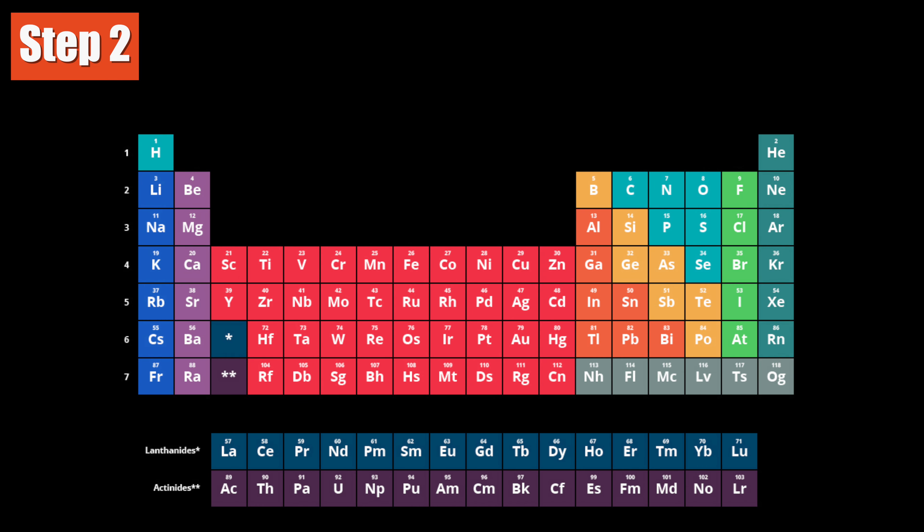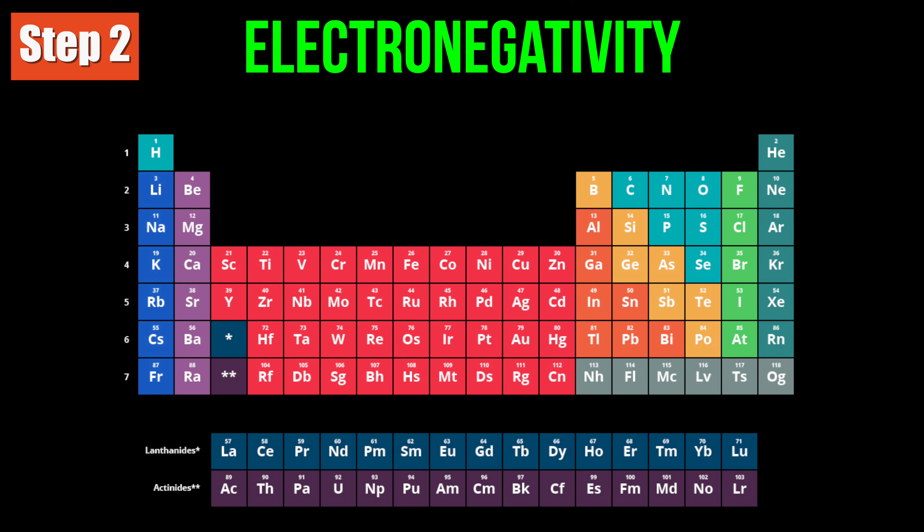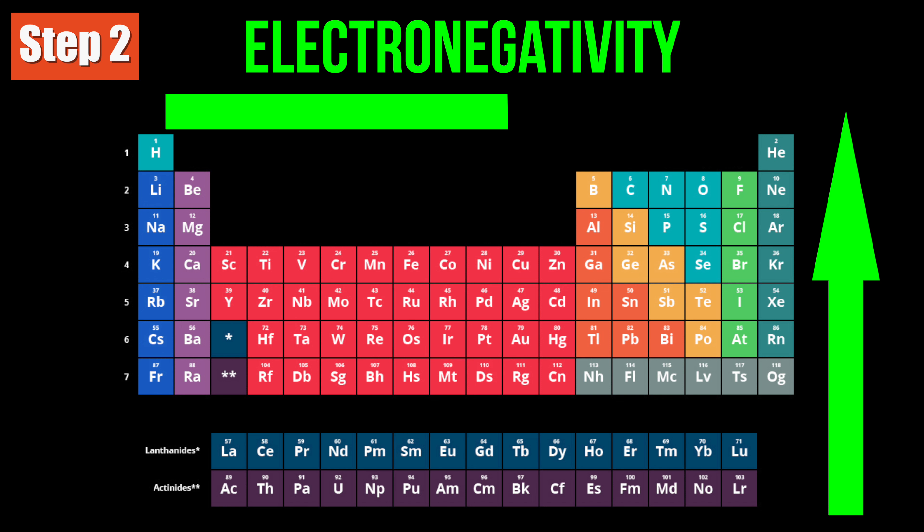Step 2: Determine the central atom. The central atom will be the one that can make the most bonds, or the least electronegative atom. Let's look at the periodic table one more time. Electronegativity increases moving up a group and moving from the left to the right across a period. Nitrogen is the central atom in this case.